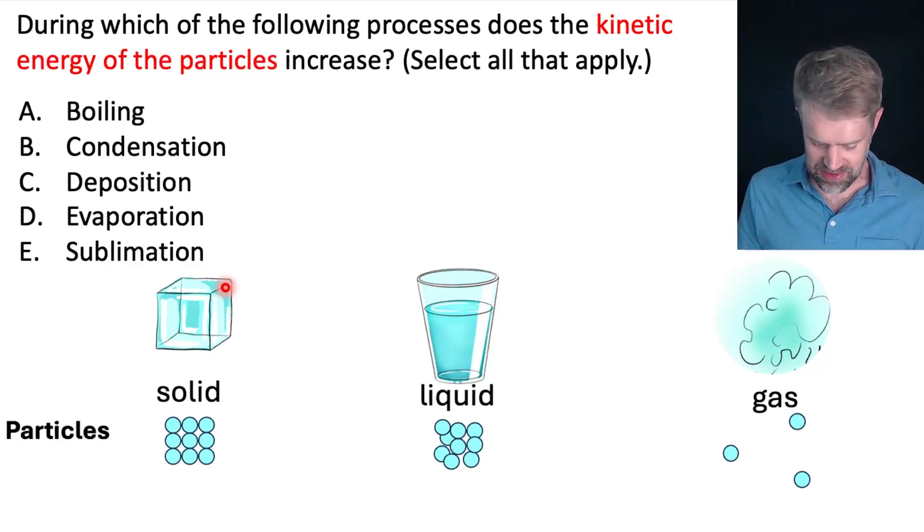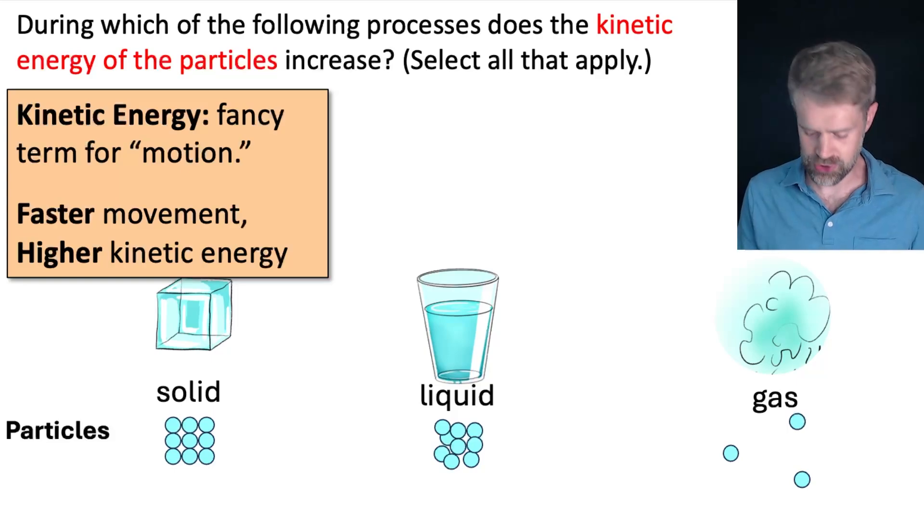Well, if you could zoom into anything zillions of times, you'd see that it's made of tiny particles. And in different states of matter, the particles are organized in different ways. You see that here, with the particles in solid, liquid, and gas. But most importantly, these particles are also moving. And that's where kinetic energy comes in. Kinetic energy is basically a fancy term for motion or movement. The faster the movement, the higher the kinetic energy. Faster motion, faster movement, higher kinetic energy.